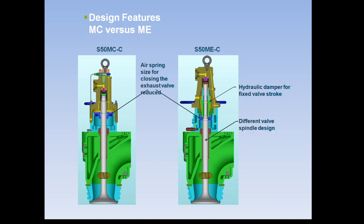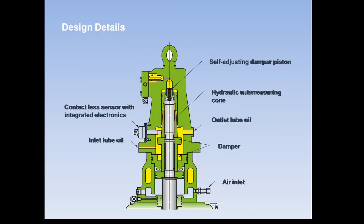So these are the basic differences between the MC series and ME series exhaust valve. First, a feedback sensor has been provided. Second, sealing oil is supplied from the tapping of the hydraulic piston cone for lubrication. Third, a hydraulic damper has been provided for better smooth opening and closing. Fourth, the air spring size has been reduced. And fifth, the spindle design has been changed for accommodation of the hydraulic cone.